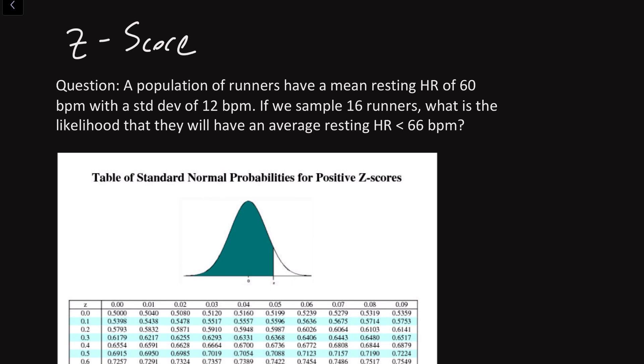In this following question statement, we're told that we have a population of runners that has a mean resting heart rate of 60 beats per minute and a standard deviation of 12 beats per minute. If we randomly sampled 16 runners, we want to know what is the likelihood that the average resting heart rate of this sample is going to be less than 66 beats per minute. This is where Z-score is going to come into this picture.